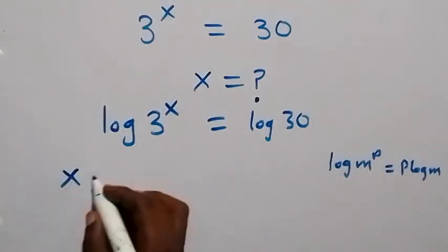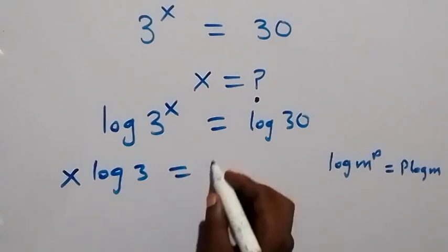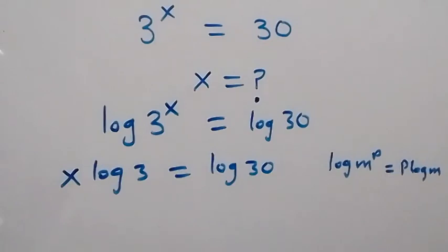this becomes x log 3 now equals to log 30. Then from here let's divide both sides by log 3.